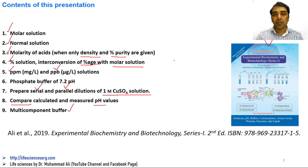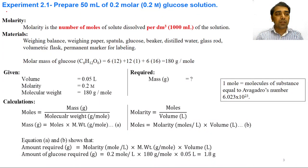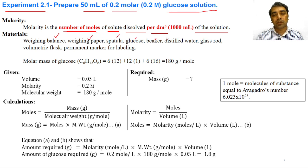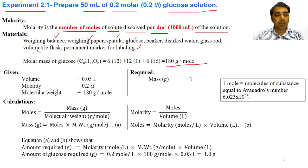This is the manual that will be followed for all these experiments. Experiment 2.1 is about how we will prepare 50 ml of 0.2 molar glucose solution. The definition of molarity is the number of moles of a solute dissolved per decimetre cube of a solution. The molecular weight of glucose is 180 gram per mole. Given: 50 ml of solution is required, molarity is 0.2 molar, and molecular weight is given.